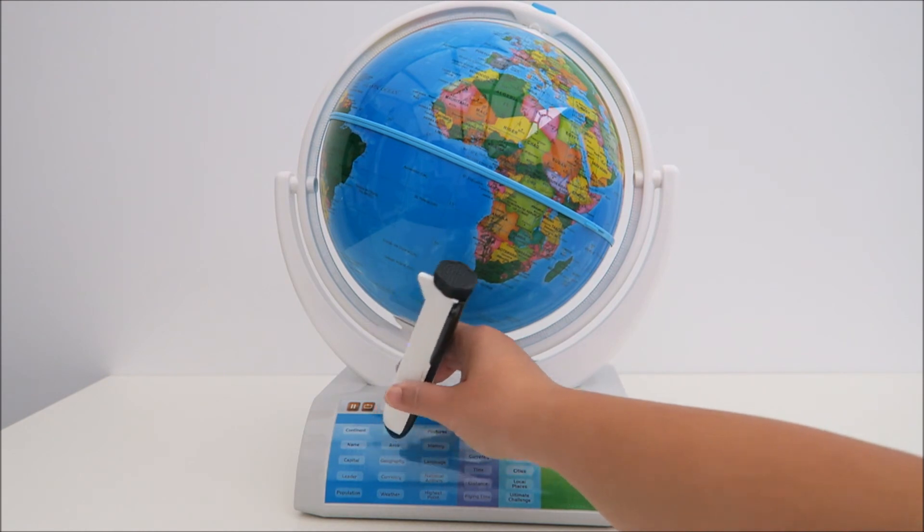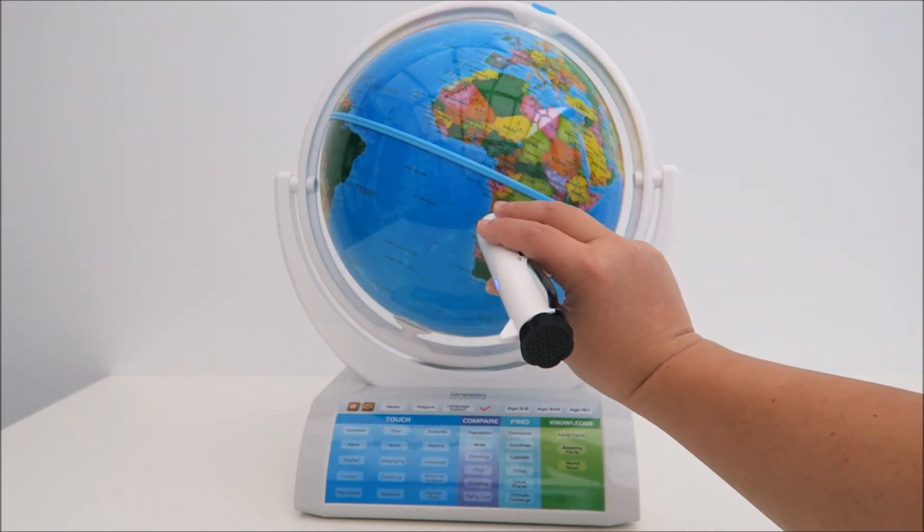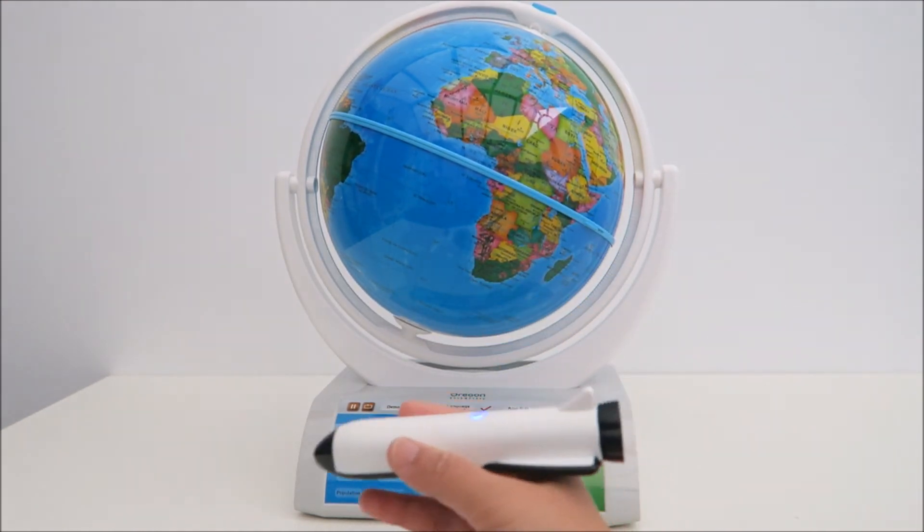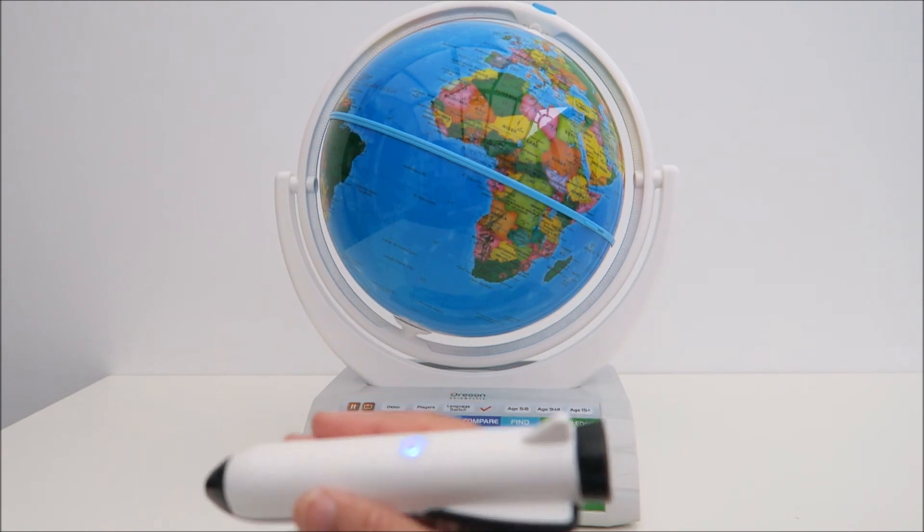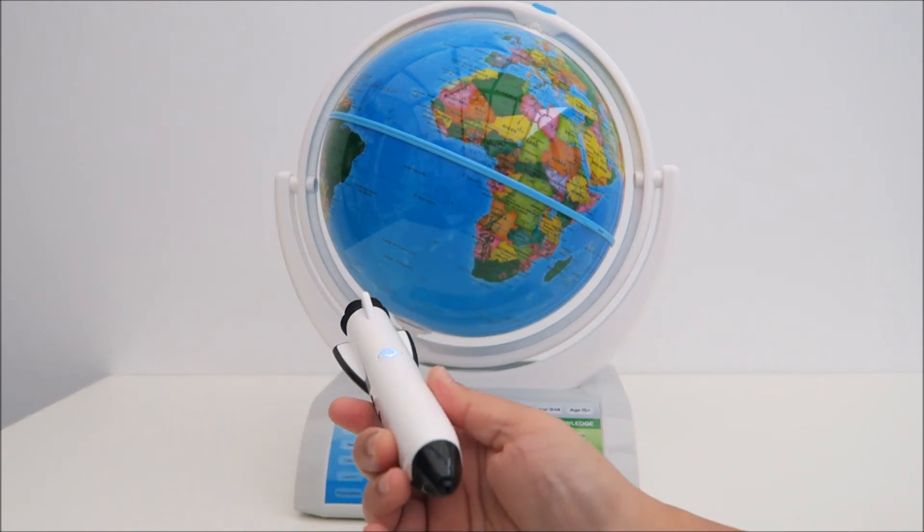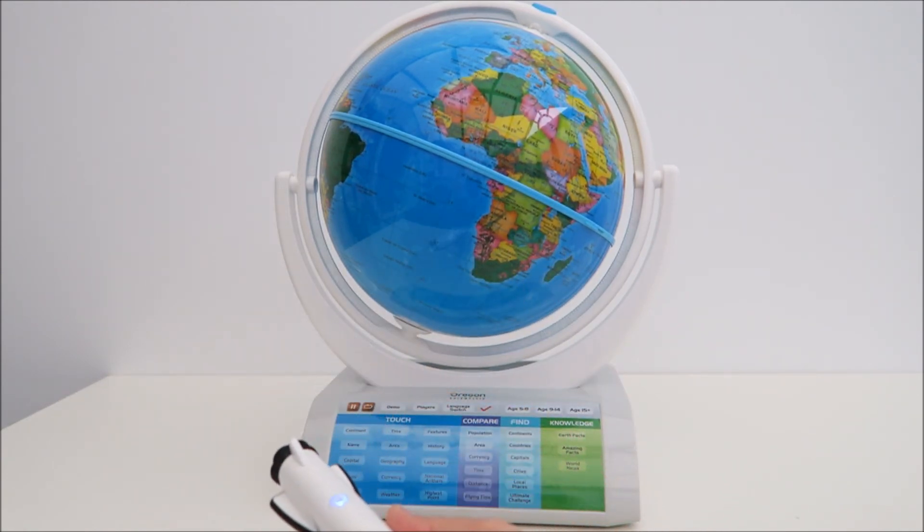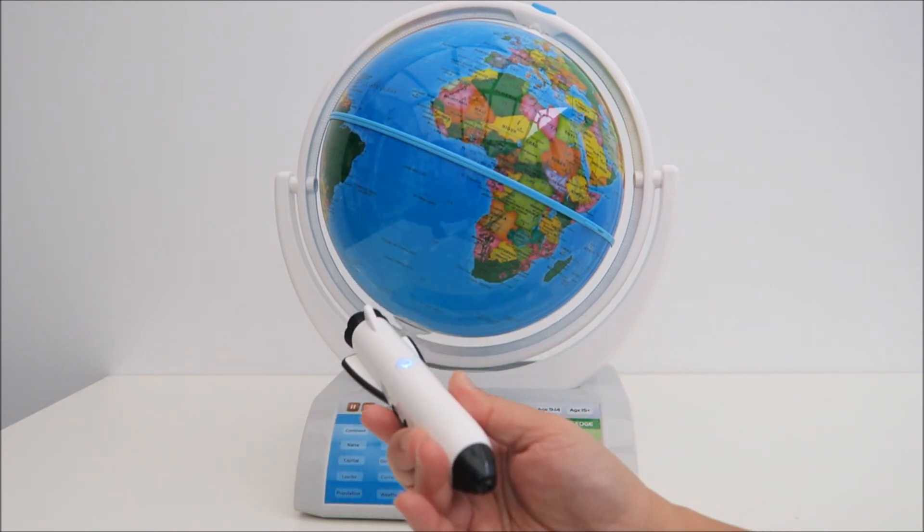And then let me see what geography says. Angola is located in Southern Africa, bordering the Democratic Republic of the Congo next to the South Atlantic Ocean. So it gives you a lot of information. Your children can touch it and then to learn about the capital, the name, the weather, the population, everything on this smart learning phone.